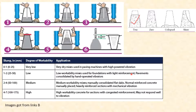A slump of 50 to 100mm indicates medium workability, used for normal reinforced concrete that is manually placed. A slump of 100 to 175mm indicates high workability, normally used for ready-mix concrete, pumped concrete, and congested reinforcement.